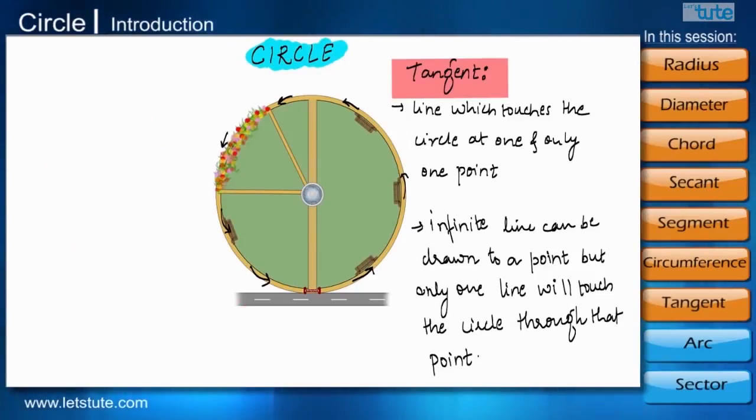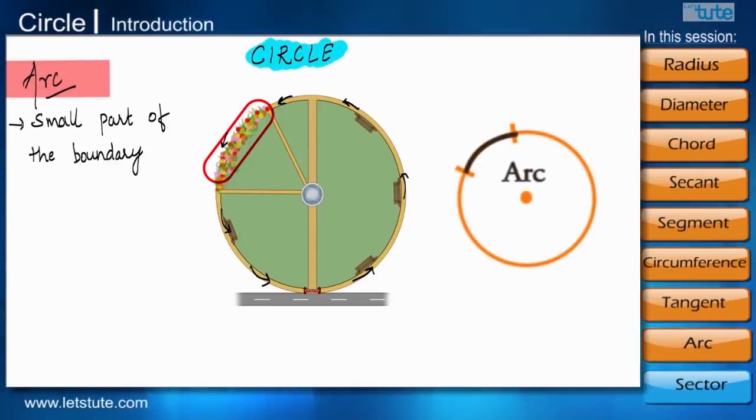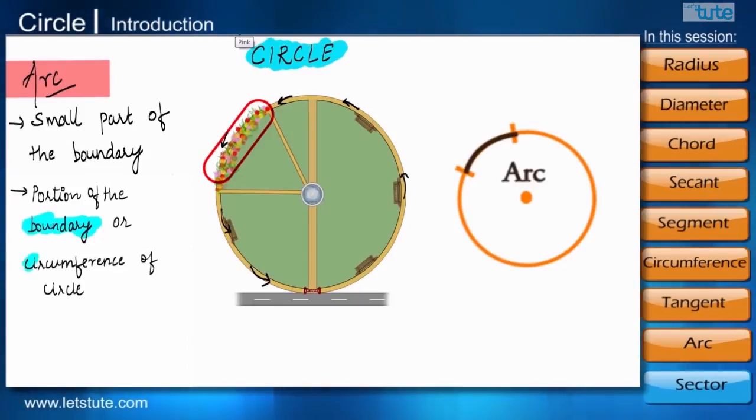On the boundary of the park, there is a part which contains all types of flowers. This area is just a small part of the boundary and you can see that it looks like an arc. And so friends, it is called as an arc itself. An arc is the portion of the boundary or the circumference in the circle.